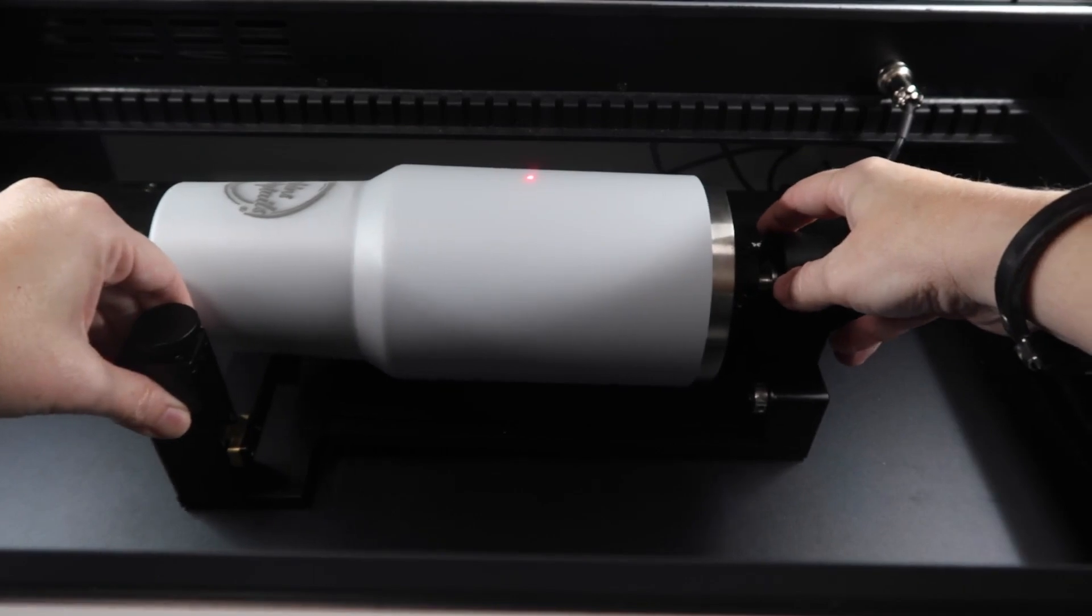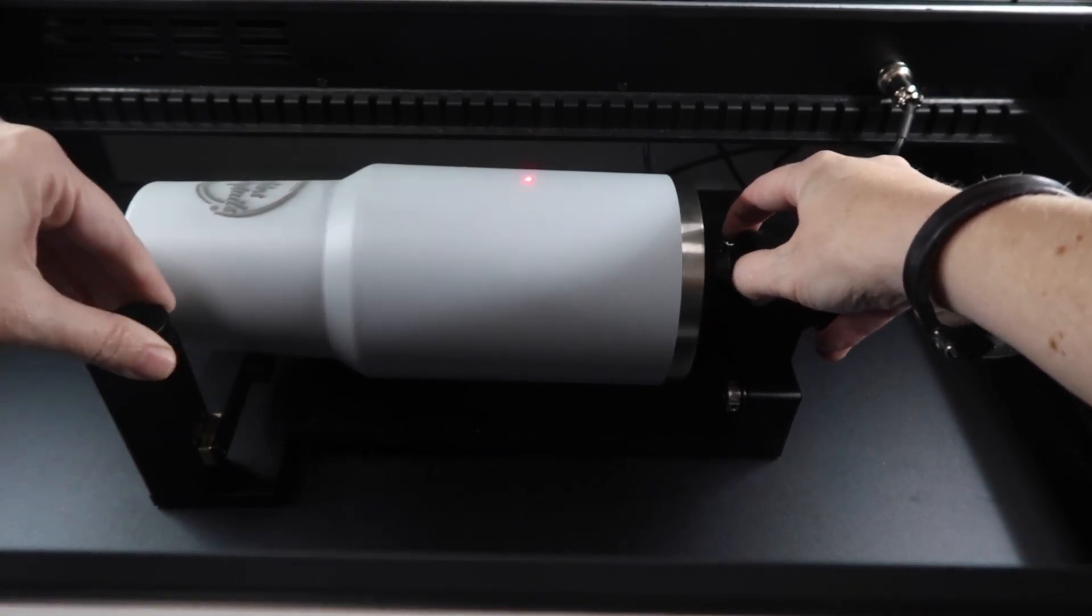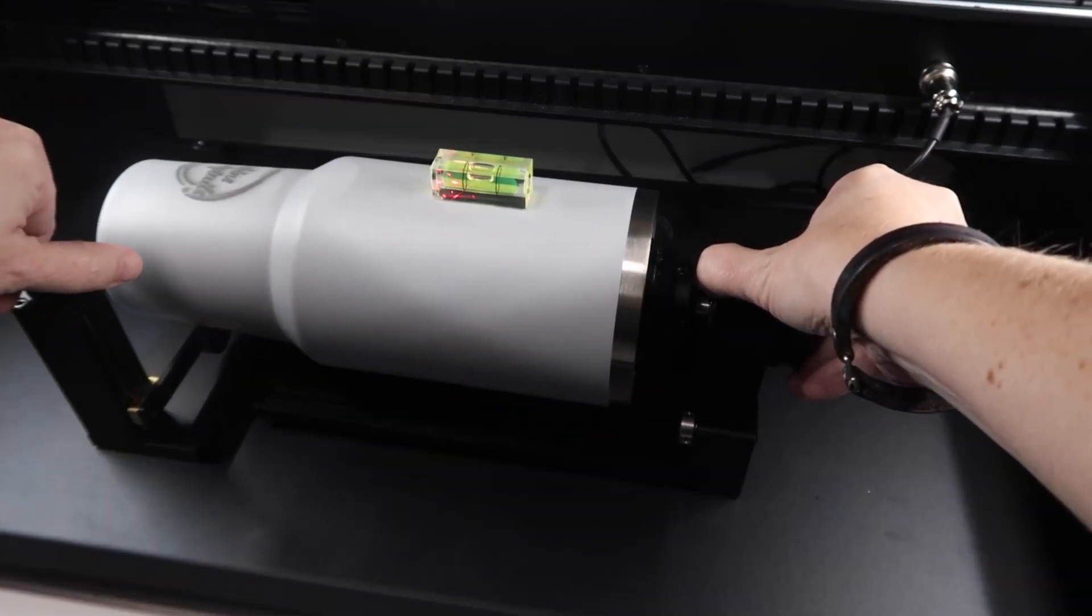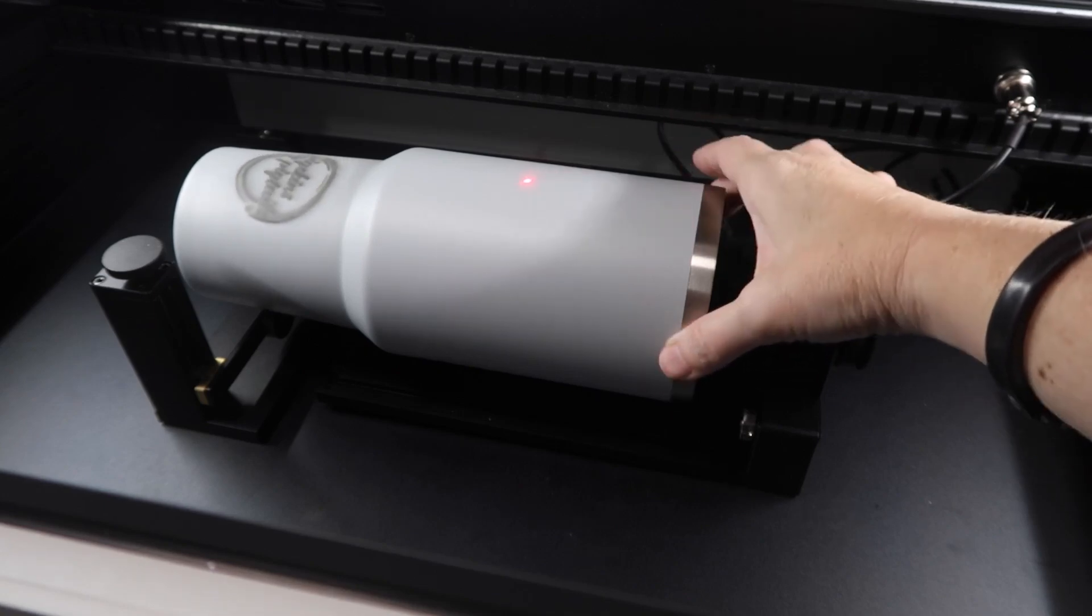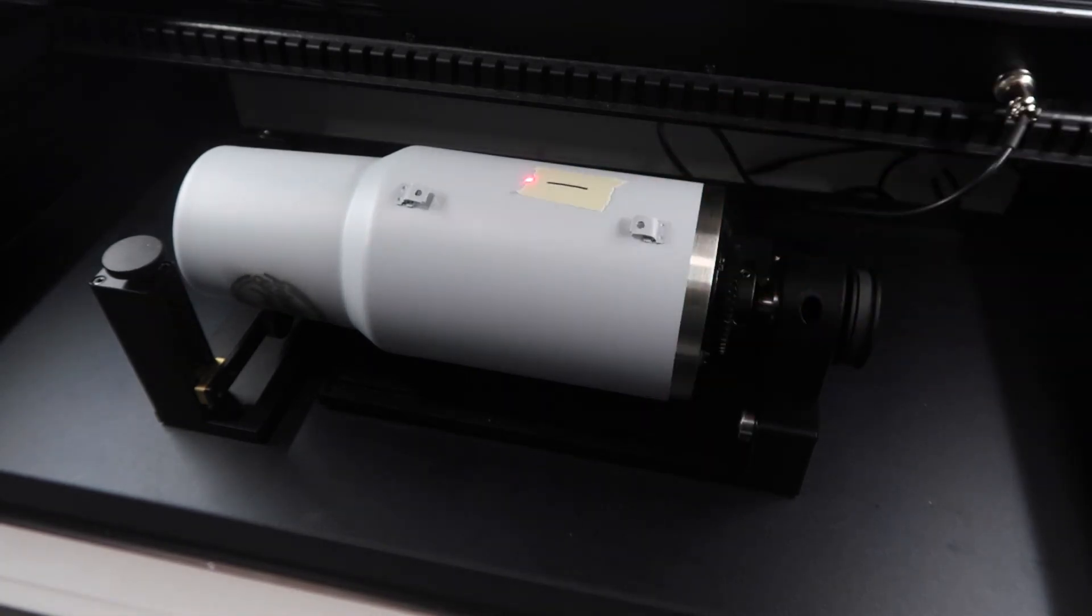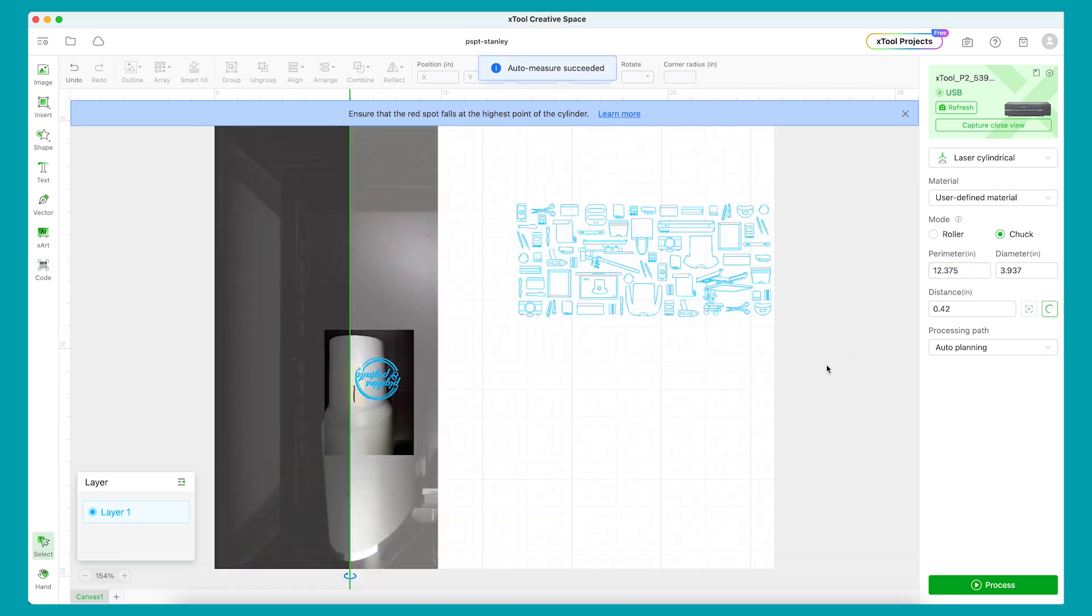I'm moving it so that the highest part is lined up with the laser. Use the level again to adjust the tilt until it's level. Then line up the tape mark with the laser and let's go back to the software. In creative space, my perimeter needs to be changed to 12.375 inches for the top part. Then click the auto measure to set the distance.